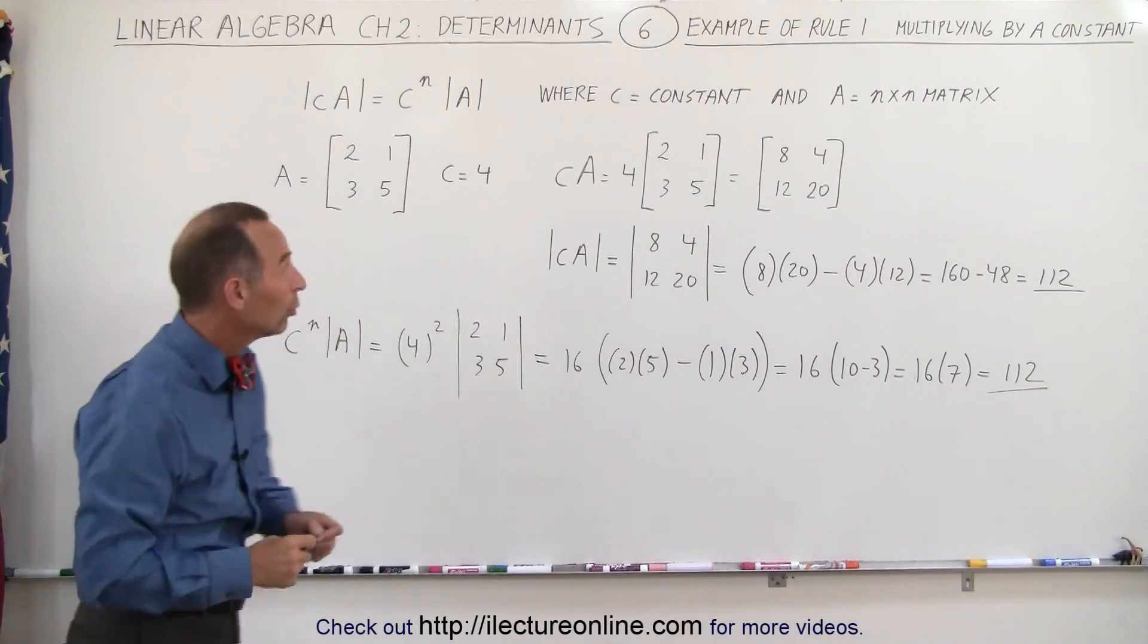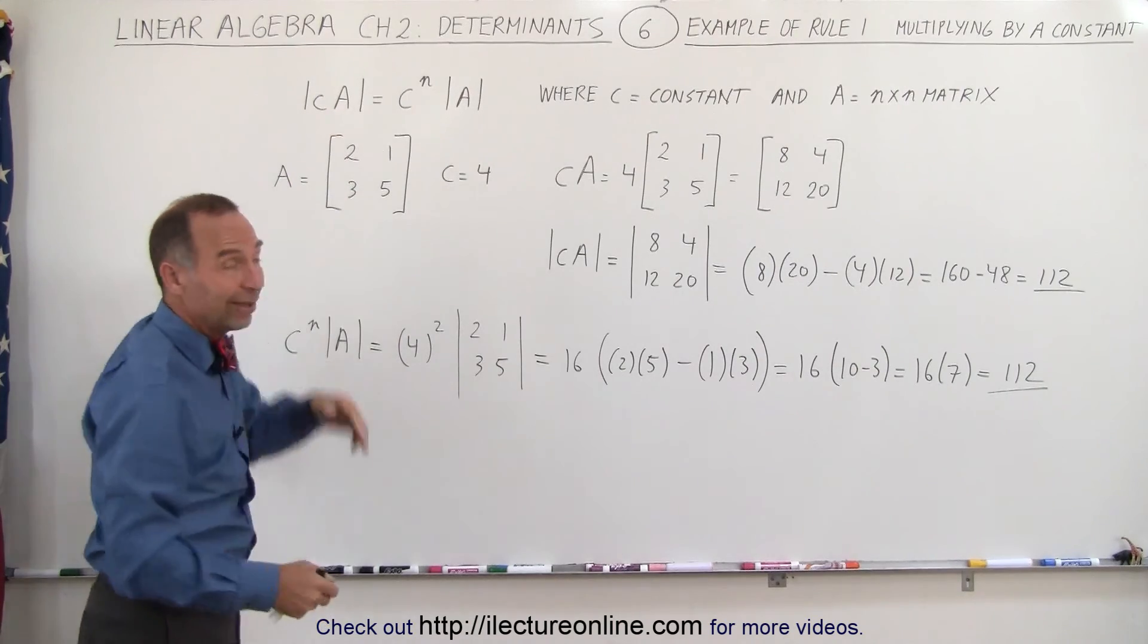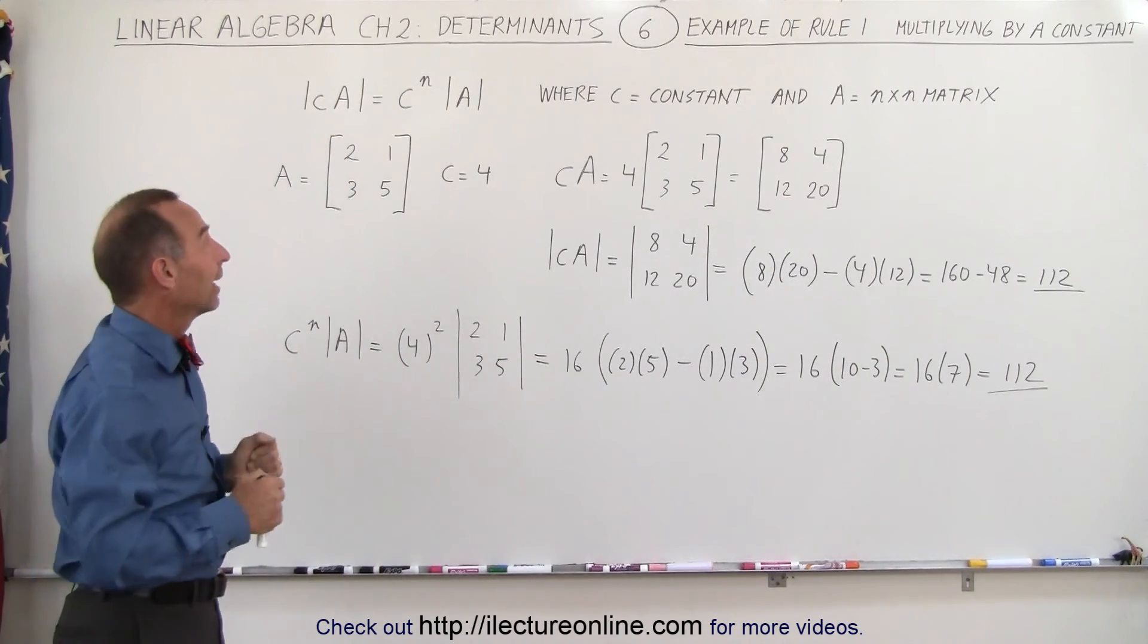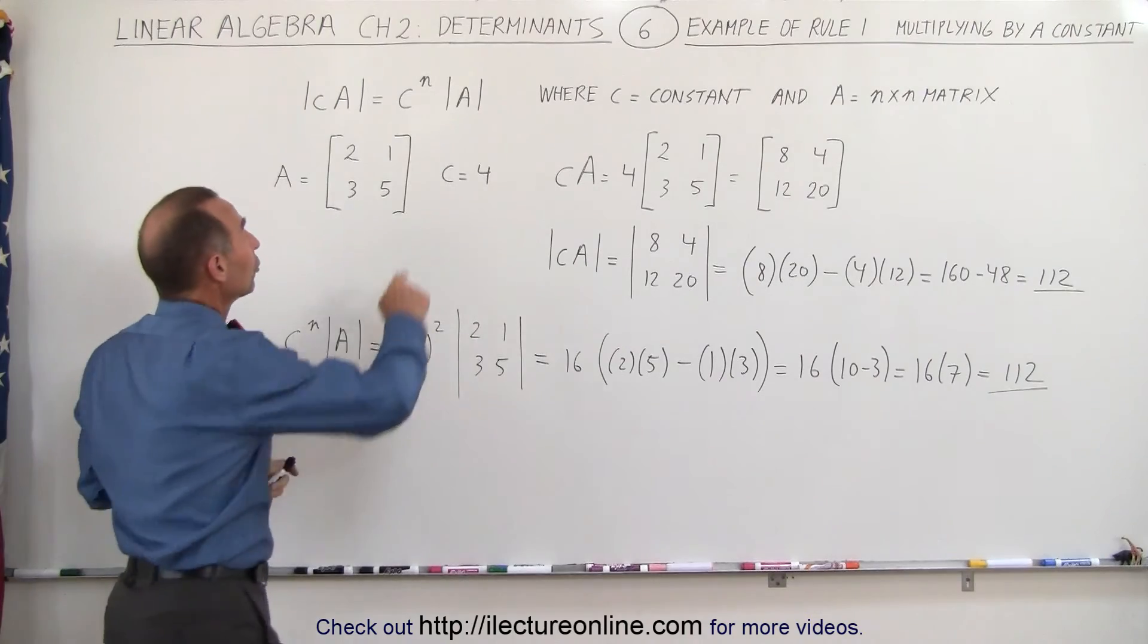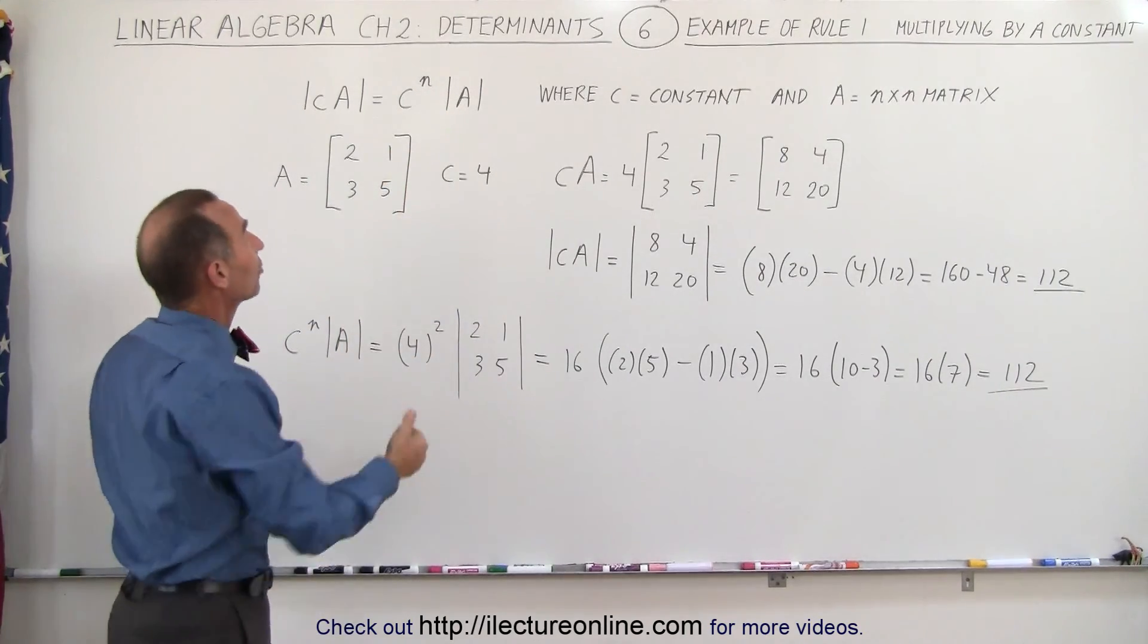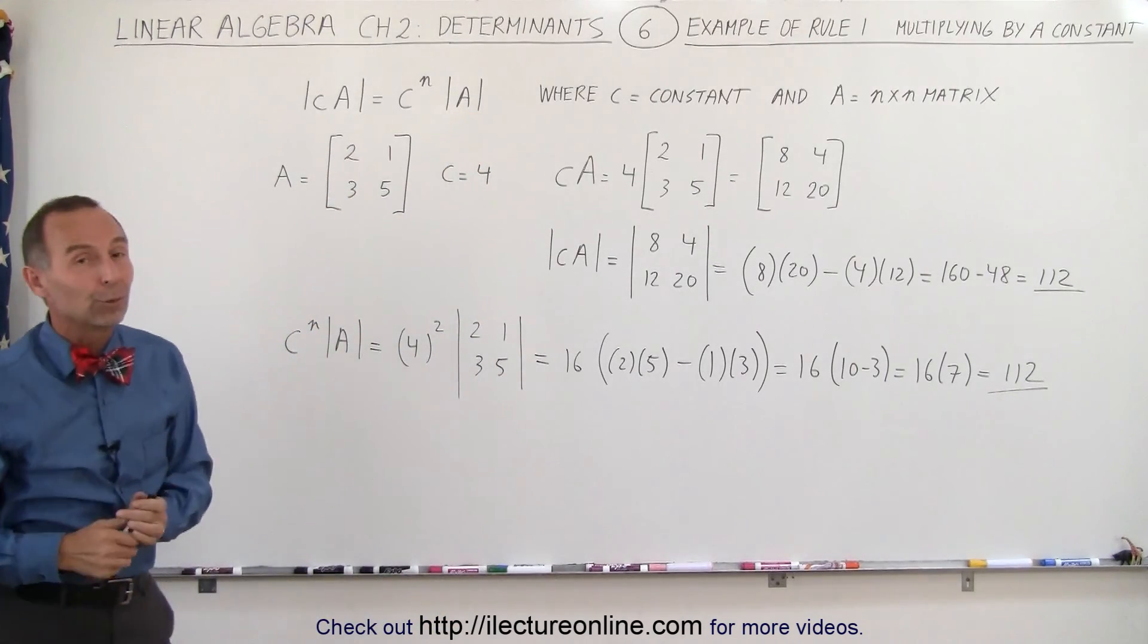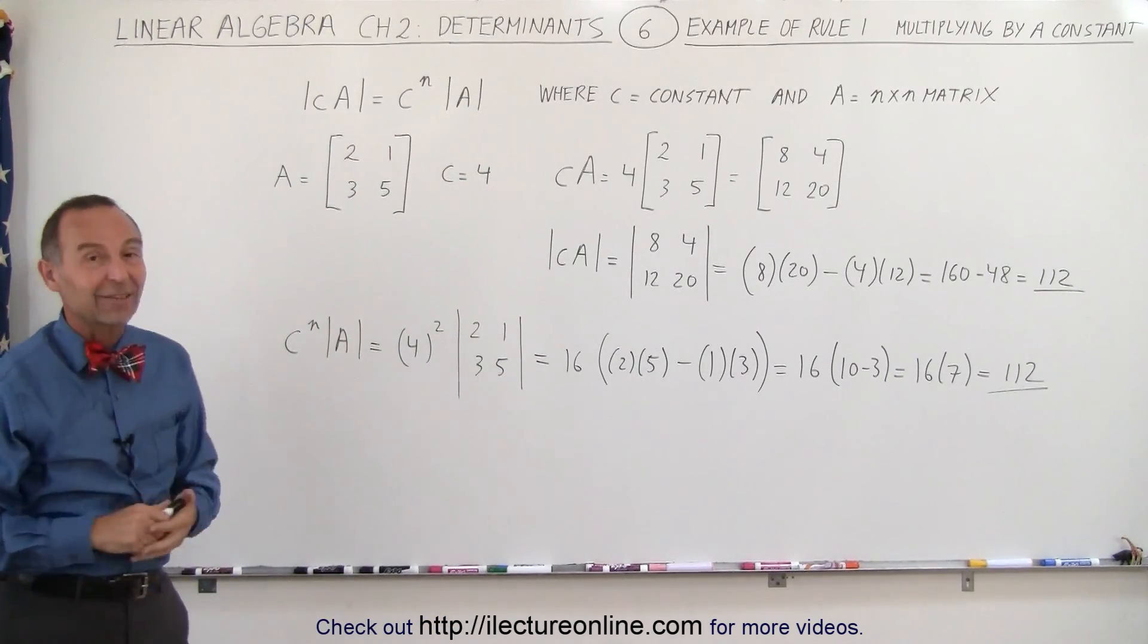So this shows the rule that you can take a matrix, multiply it times a constant, then take the determinant of that, and that should always be equal to the constant raised to the n power, n being the order of the matrix, times the determinant of the matrix itself. It's a handy rule to know. That's how that works.